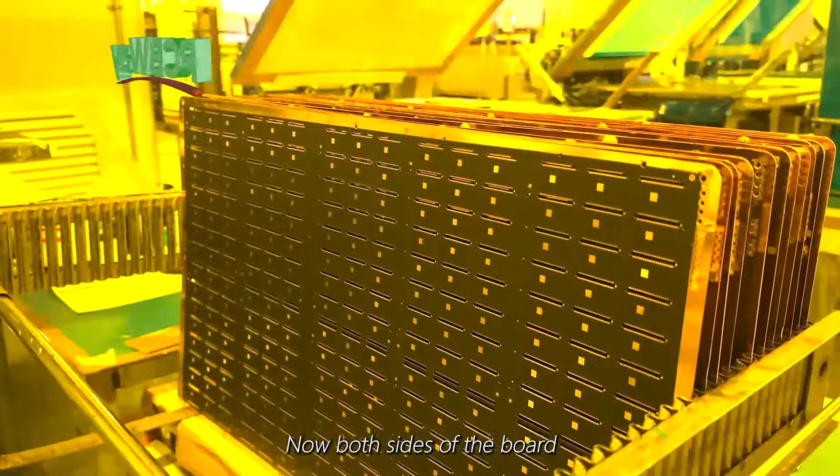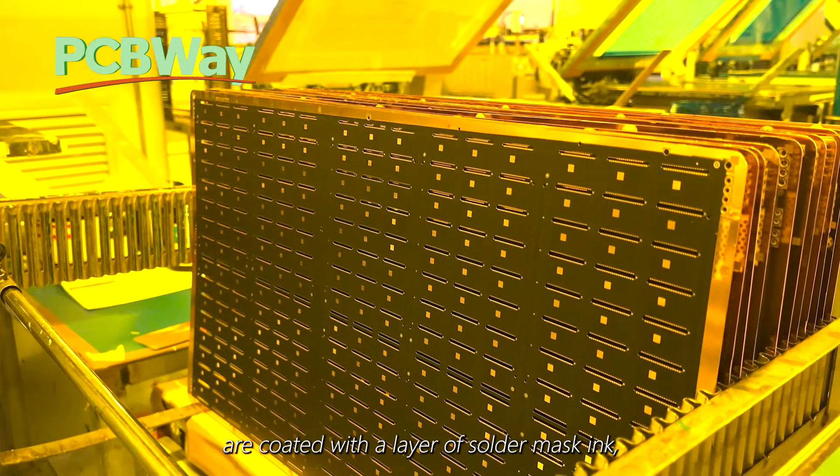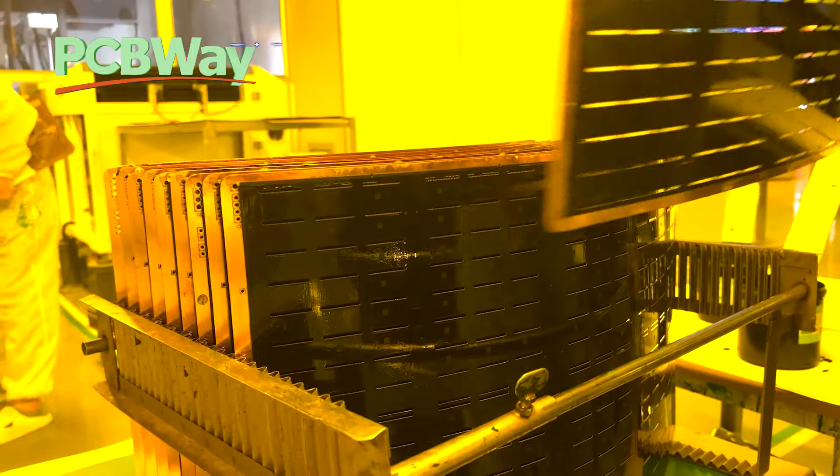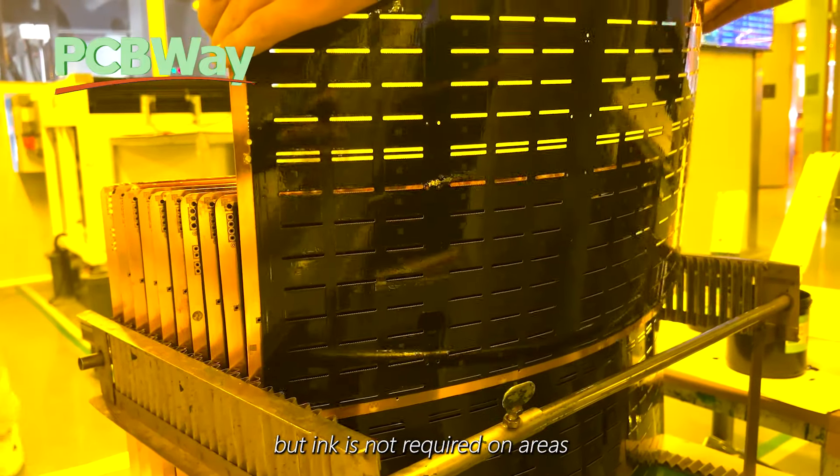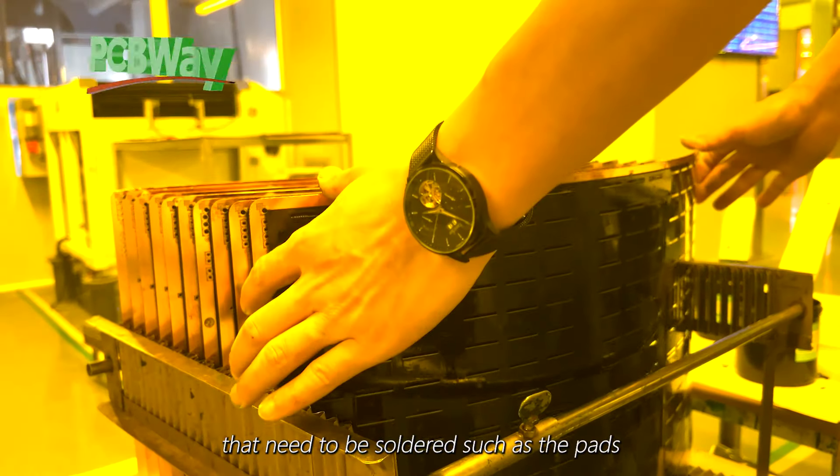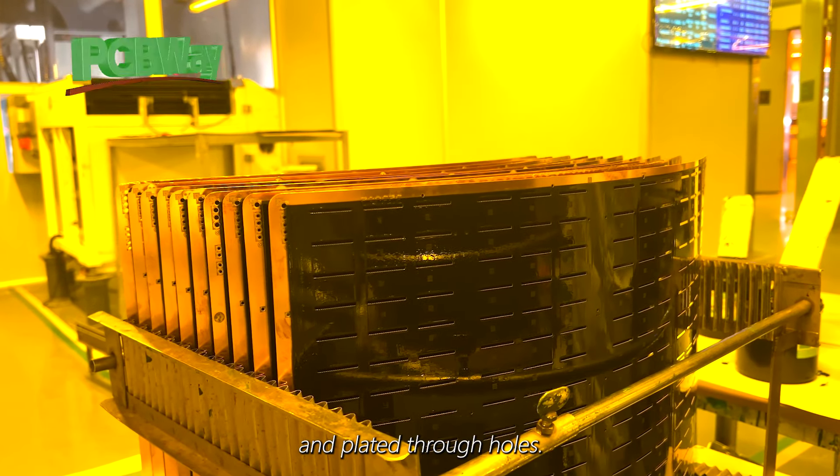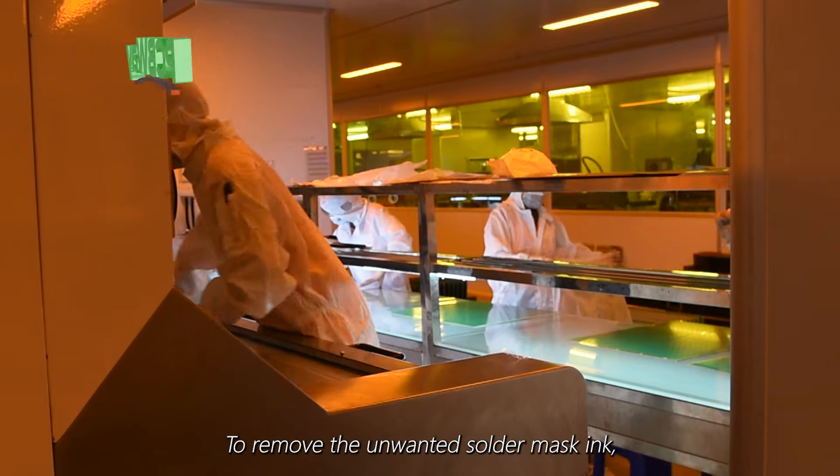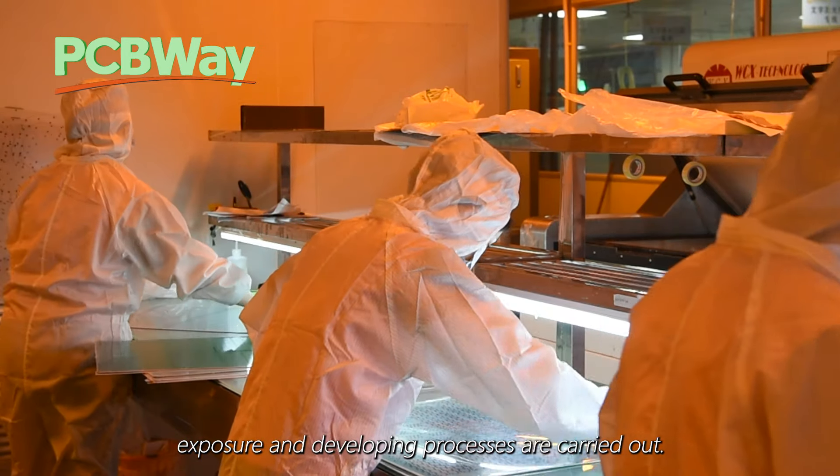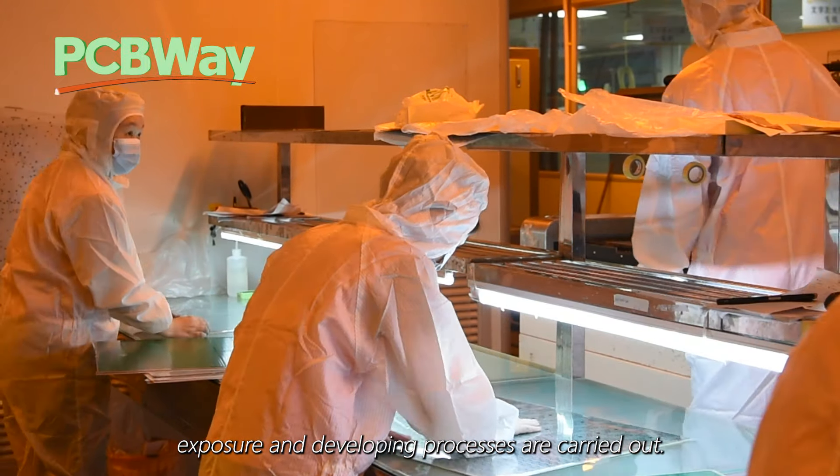Now both sides of the board are coated with a layer of solder mask ink, but the ink is not required on areas that need to be soldered such as the pads and plated through holes. To remove the unwanted solder mask ink, exposure and developing processes are carried out.